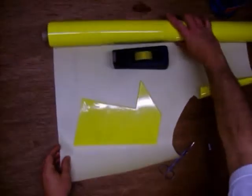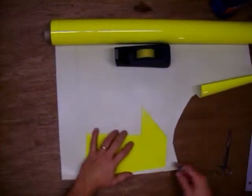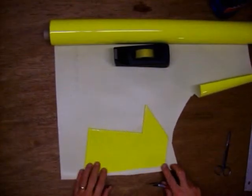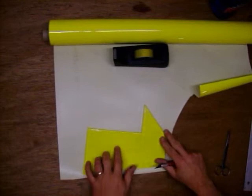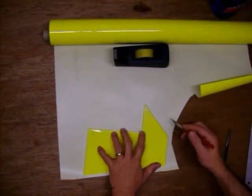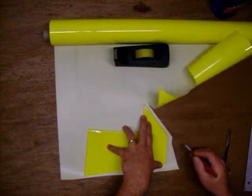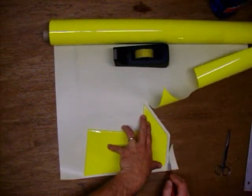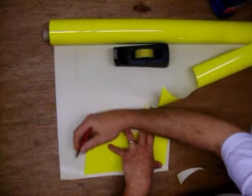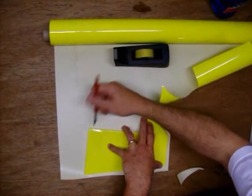Alright, to do the other side, same type thing. Just going to lay the piece down, and this time you want it to face up because we are doing the other side. Do the same thing, just trim it out. This one can be a little bit more exact because we are just going to cut to the inside of the lines. We don't have to wrap anything around.